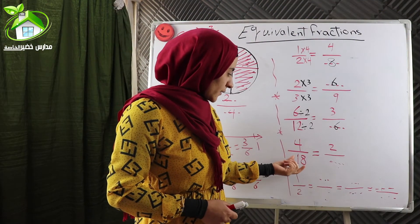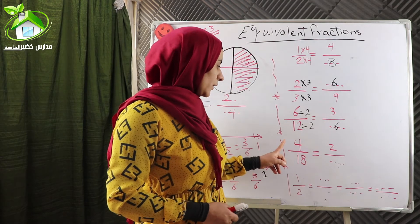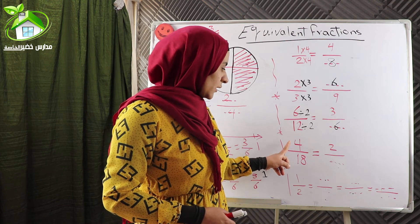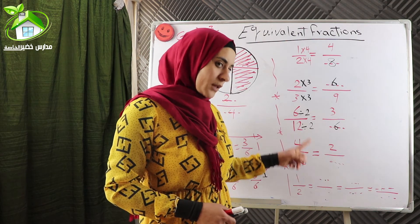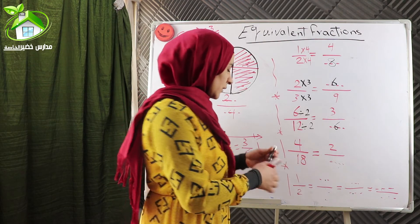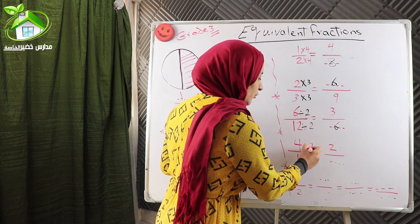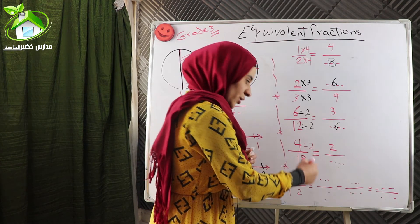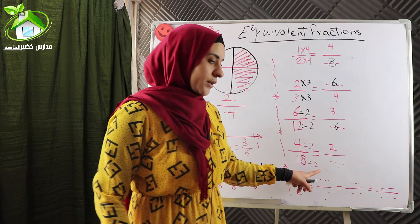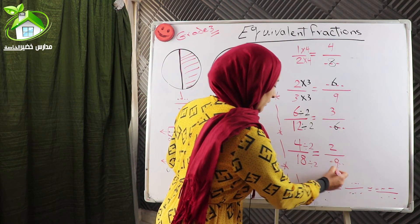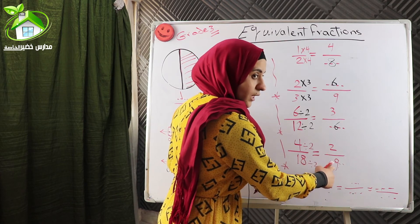Let's see the next example. Four over eighteen equals two over what? We look at the numerator: four becomes two, four becomes smaller, so we will make division. Four divided by what equals two? Four divided by two equals two. So we should also divide the denominator by two. Eighteen divided by two equals nine. So four over eighteen equals two over nine.